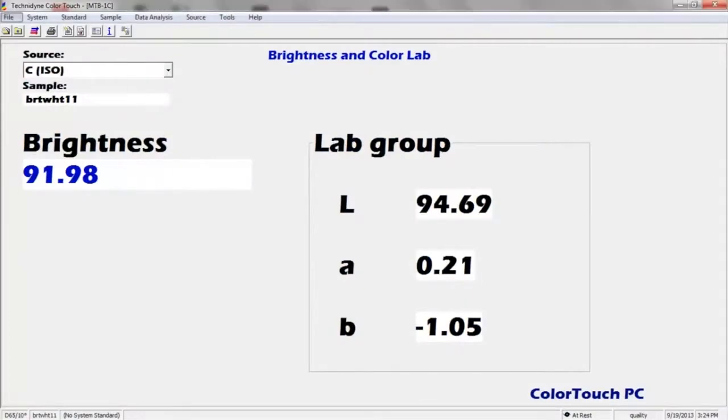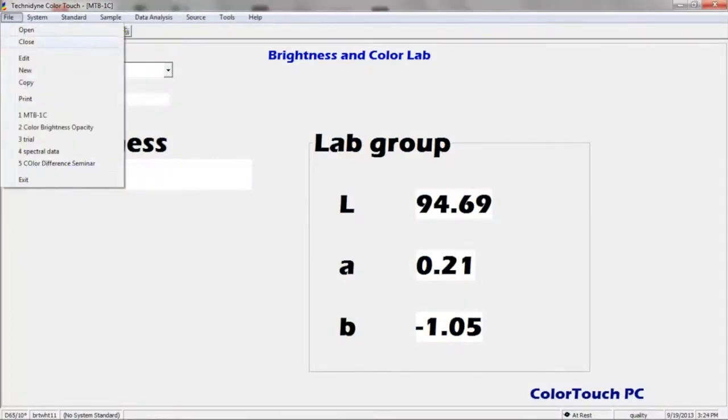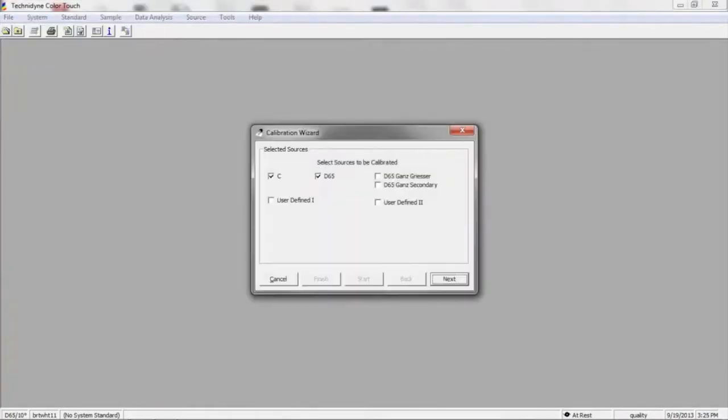You want to make sure that all measurement presentation screens are closed, so we'll go to File and select Close. From this main screen, we'll go to System and Primary Calibration. Here we'll just press Next since C and D65 are the default preferences. Go ahead and push Start.